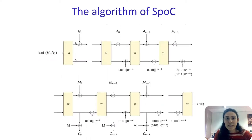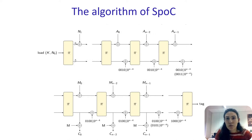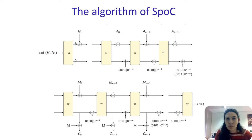This is a diagram of the mode of operation of SPOC. SPOC is a sponge construction and therefore the state is divided into rate and capacity bits. The authors introduce mass capacity bits, which is where the message and associated data are added. The mode of operation consists of the following phases: initialization, associated data processing, message processing, and tag generation.